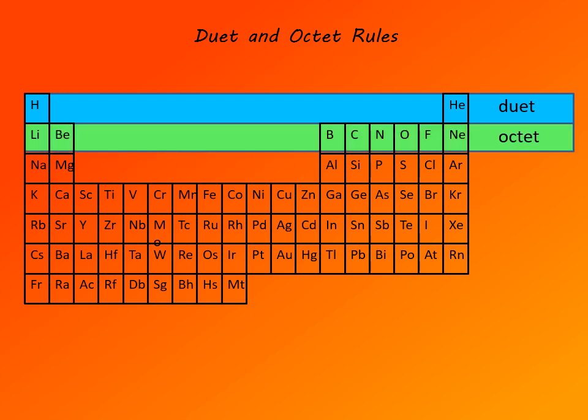Elements of the second period follow octet rule, which means that in compounds, they can have maximum of eight electrons. Now, while this applies to entire second period, in practice, it applies only to boron, carbon, nitrogen, oxygen, and fluorine. Lithium and beryllium form ionic compounds by losing electrons, by giving up their valence electrons, and neon, as a noble gas, does not form compounds.